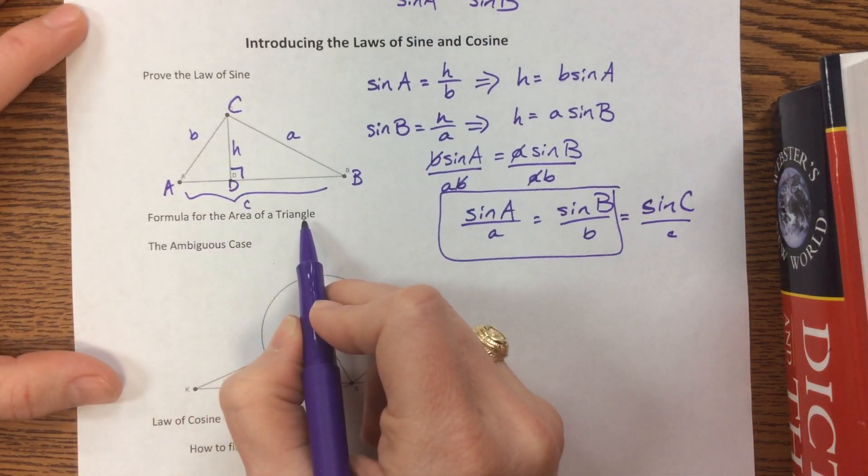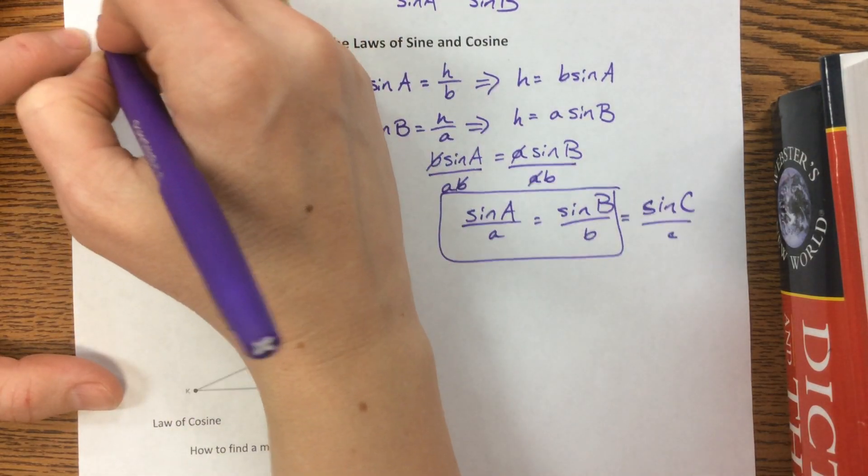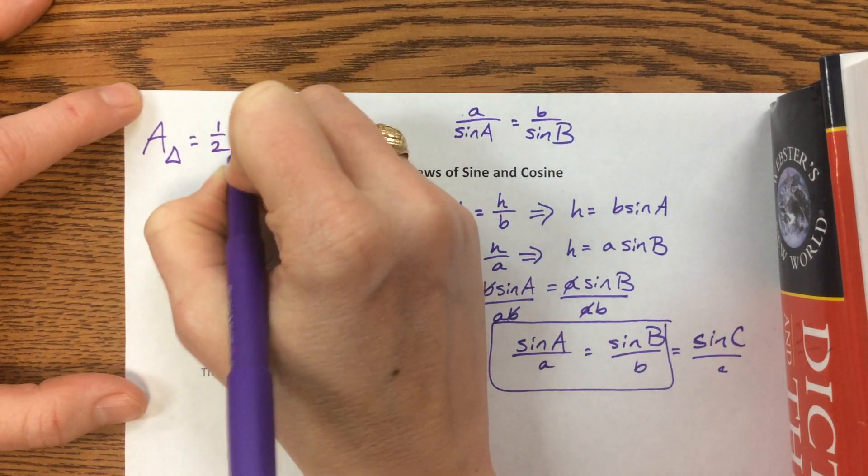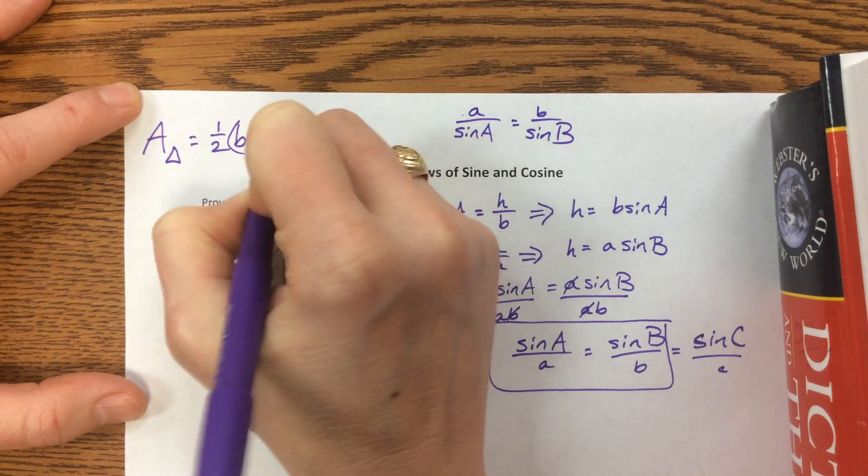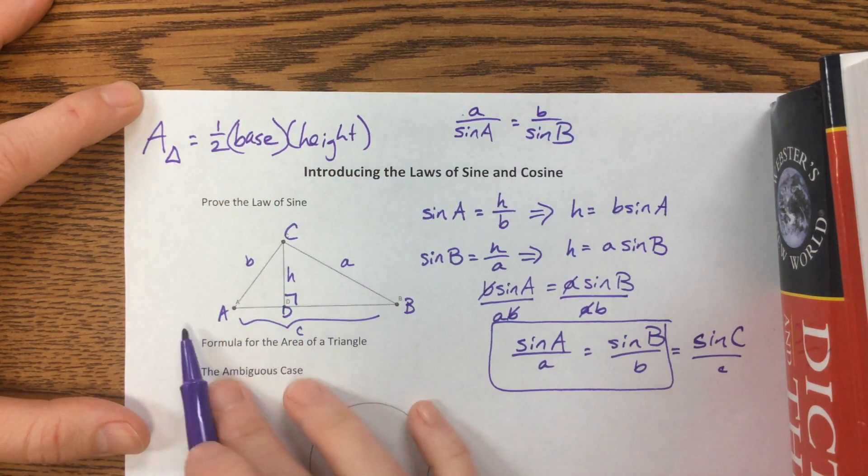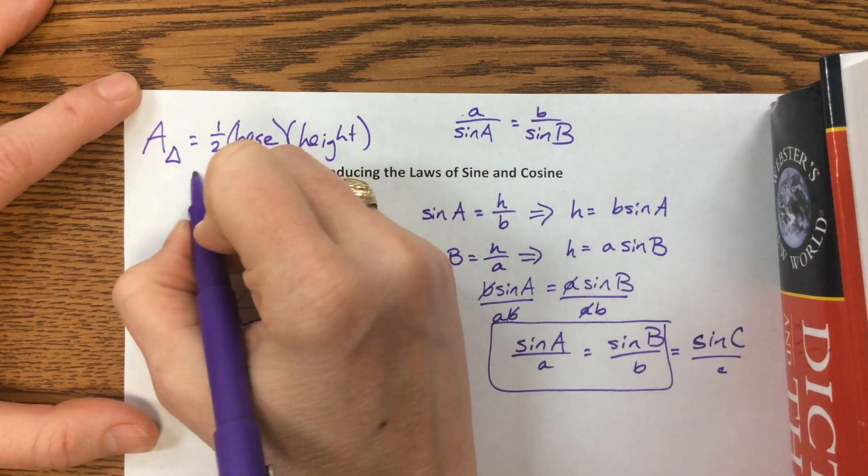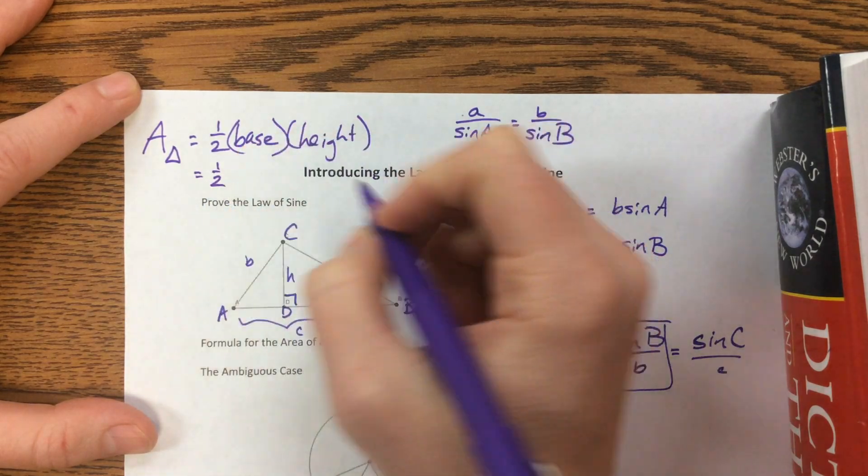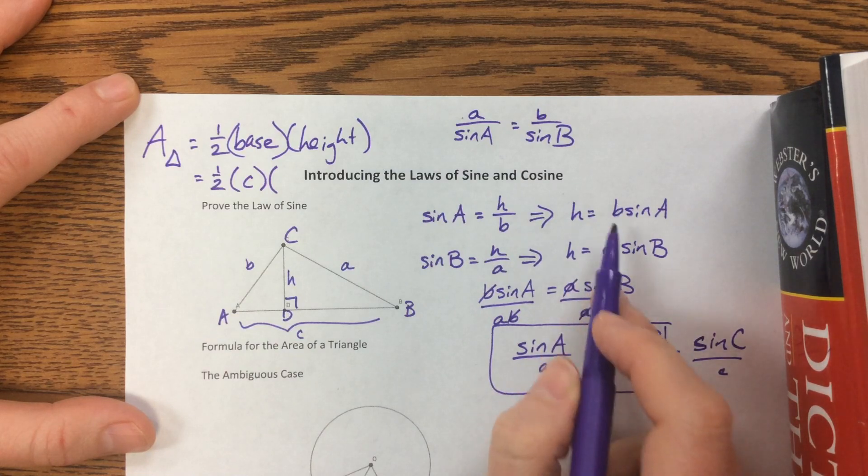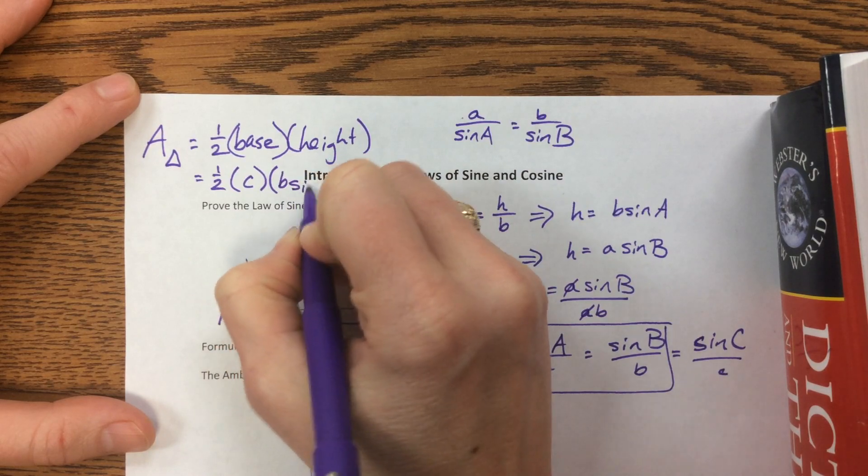The formula for the area of a triangle, if you notice here, back in geometry we learned that the area of a triangle is equal to one half base times height. In this particular triangle, our base is C and our height is H. So we can say this is one half, our base is C, our height could be either one of those.